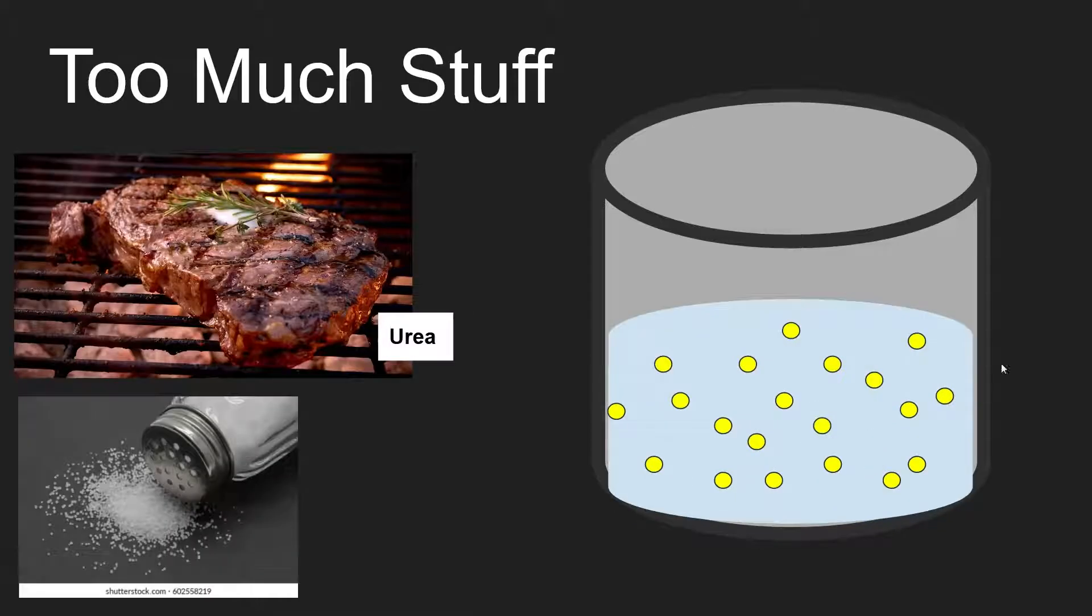Let's start with too much stuff. Foods such as meat are rich in protein. When the body breaks down the protein for fuel, it results in the production of urea. Urea is one of the waste products that's removed by the kidney.